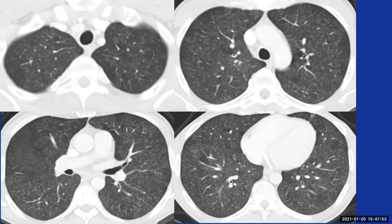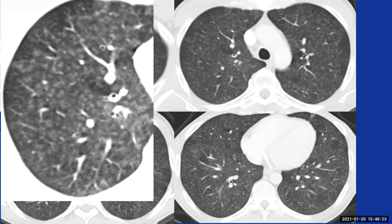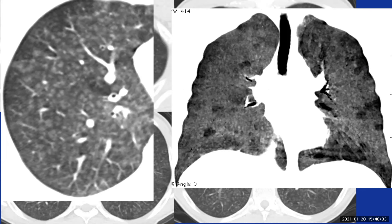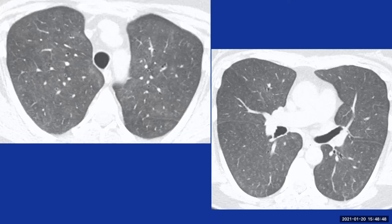Another example really shows a nice example of centrilobular nodularity bilaterally. We know they are centrilobular because they demonstrate relative subpleural sparing — by definition, centrilobular nodularity should give subpleural sparing based on secondary pulmonary lobular anatomy. There are superimposed areas of mosaic attenuation bilaterally, likely representing air trapping. The minimum intensity projection image brings out the secondary pulmonary lobular anatomy and areas of mosaic attenuation confirmed as air trapping in this patient with non-fibrotic HP.